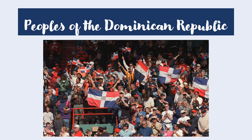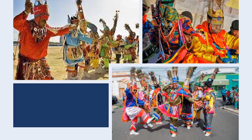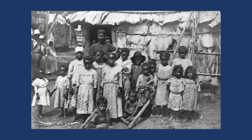This slide marks the third part of the presentation: Peoples of the Dominican Republic, broken up into three groups — Los Cocolos, the Haitian economic migrants, and Dominicans in the tourism industry. Los Cocolos is an Afro-Caribbean descendant migrant group from English-speaking Caribbean islands such as the Bahamas and Jamaica. They are recognized for their dance style, which is a mix of dancing and martial arts, and their incredibly vibrant traditional outfits. I have included a drawing of a Cocolos celebration and a picture of their early 20th-century settlement.